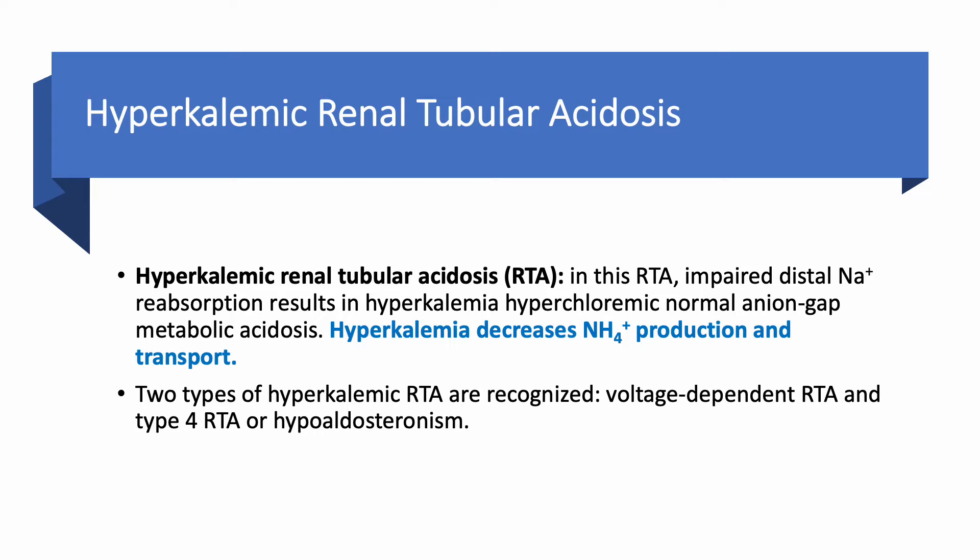In hyperkalemic RTA, there is impaired distal sodium absorption. If sodium does not go in, potassium is not going to go out, and we end up with hyperkalemic, hyperchloremic, normal anion gap metabolic acidosis. We have two categories: voltage-dependent RTA and type 4 RTA, or hypoaldosteronism.